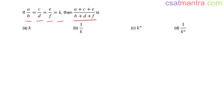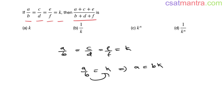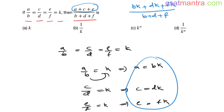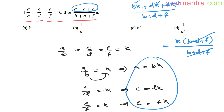To prove this: since a/b = k, we write a = bk. Similarly, c/d = k gives c = dk, and e/f = k gives e = fk. Substituting in the numerator: bk + dk + fk over b+d+f. Taking k common: k(b+d+f) over (b+d+f). The (b+d+f) cancels, giving k.